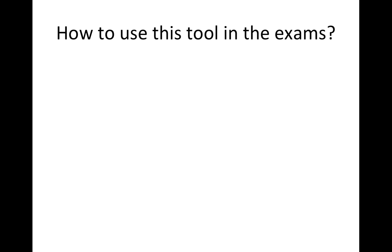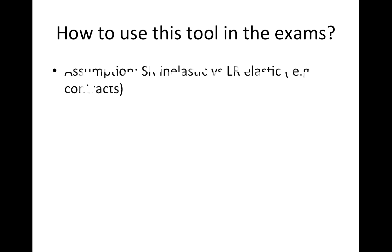Now, how do we use the Marshall-Lerner condition in exams? It is actually a very useful evaluative technique for any case dealing with exchange rates. One of the main reasons exports and imports are inelastic in the short run and elastic in the long run is that companies sign contracts to import and export. An Australian company, for instance, could have a contract to import 100 bottles of red wine from France over a period of six months. It's only afterwards, when these contracts are renegotiated under new market conditions, that elasticity changes.